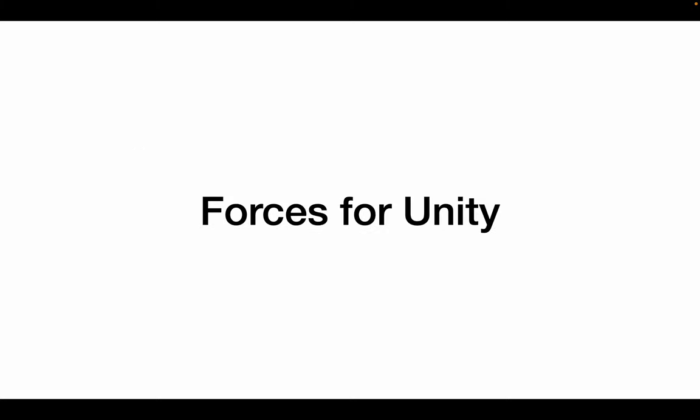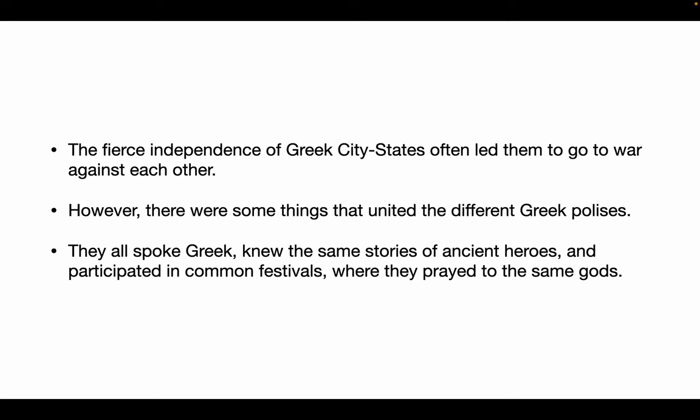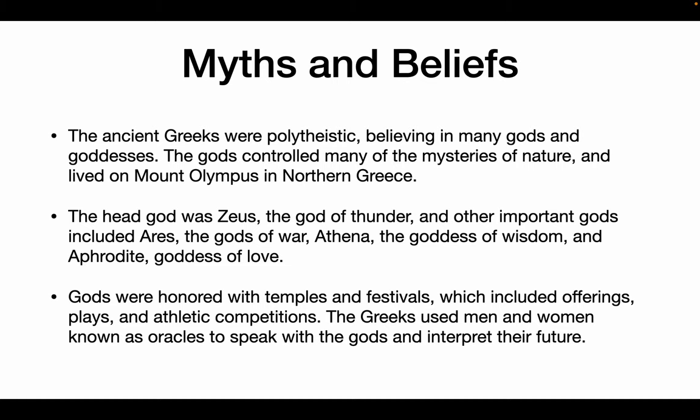Let's look at forces for unity. What united these groups? The fact that they were so independent often led these city-states to go to war against each other. However, there are some things that would unite them occasionally. First of all, their language — they all spoke Greek. They all had the same sort of oral tradition of heroes, and they all participated in the same common festivals meant to honor the gods. They all prayed to the same gods — all followers of the Greek mythological deities. The ancient Greeks were polytheistic. They had many gods and goddesses, and these gods and goddesses controlled things like lightning, earthquakes, the oceans, and the storms.